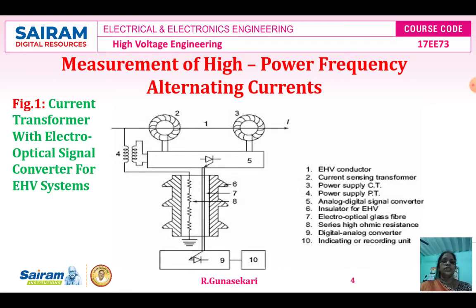Component 5 is the analog-to-digital converter, 6 is the insulator for the EHV system, 7 is the electro-optical glass fiber, 8 is the series high ohmic resistance, 9 is the digital-to-analog converter, and 10 is the indicating or recording unit. These are the components of the current transformer with the electro-optical signal principle.